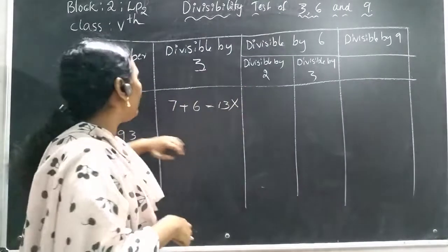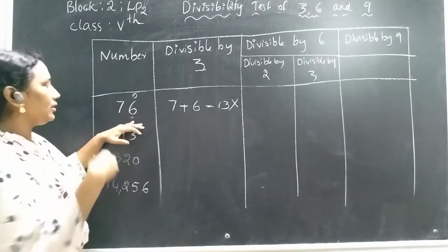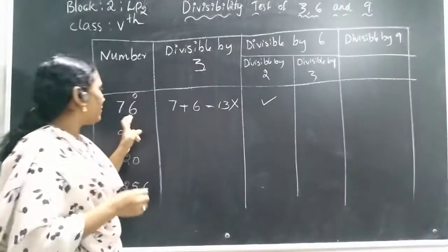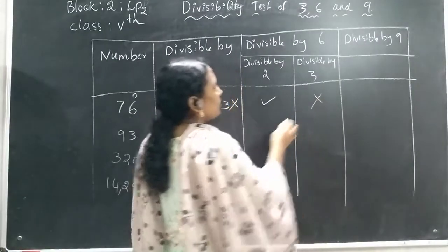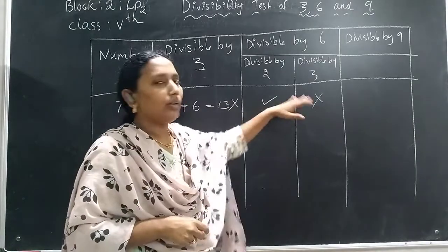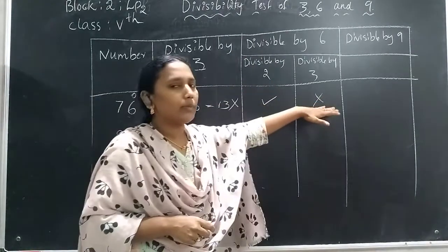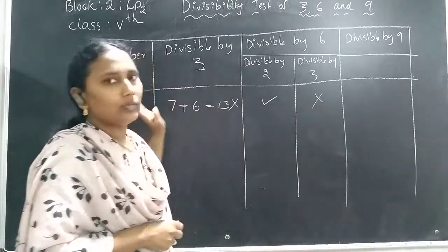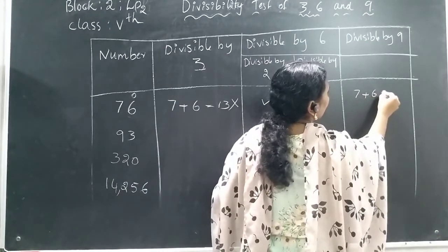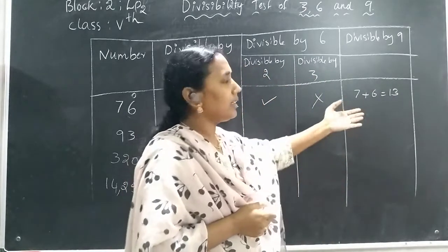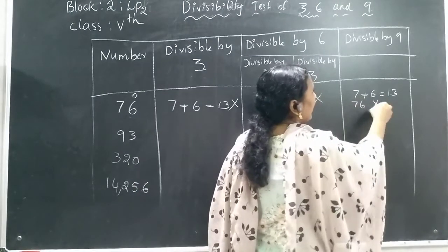For divisibility by 6: 76 has an even digit at the ones place, so it is divisible by 2. But it is not divisible by 3. Since it must be divisible by both 2 and 3 to be divisible by 6, and it is not divisible by 3, this number is not divisible by 6. For divisibility by 9: 7 plus 6 equals 13. Is 13 in the 9 times table? No. So 76 is not divisible by 9 either.